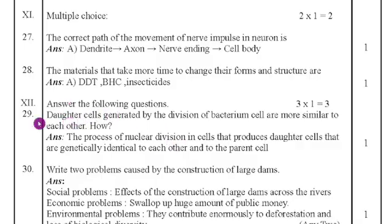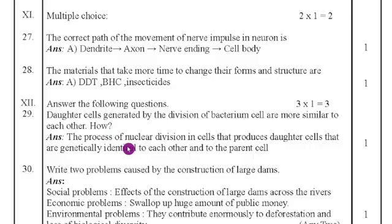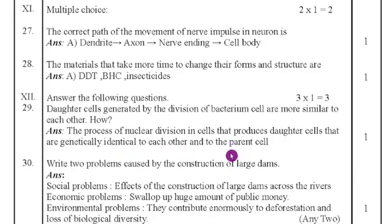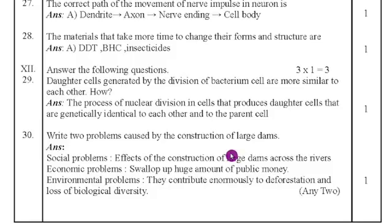Twelfth main: answer the following questions. Twenty-ninth question: daughter cells generated by division of a bacterium cell are more similar to each other. Why? Because the process of nuclear division in the cell produces daughter cells that are genetically identical to each other and to the parent cell. Thirtieth question: write two problems caused by the construction of large dams.